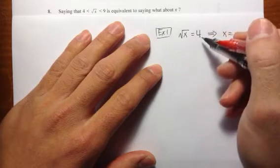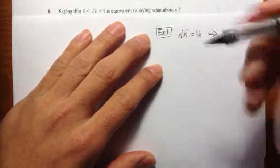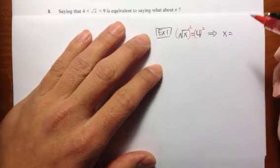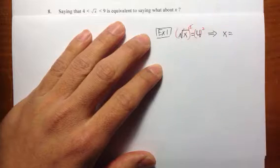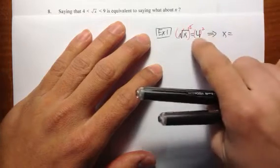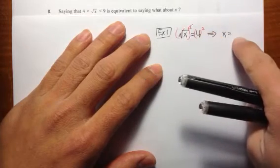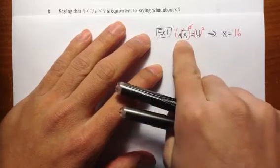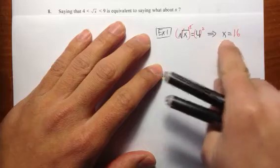Well, square root of what is equal to 4? To solve that, when you see square root, what we can do is just square both sides. Square and square root cancel each other out, right? And 4 to the second power is equal to 16. So we know from square root of x equals 4, we get x is equal to 16.